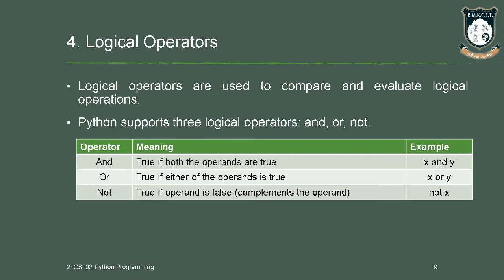In the OR operator, if any one of the operands is true you will get the result. Next is NOT, which is the complement of the operand. These are the three different operators under the logical operator category.